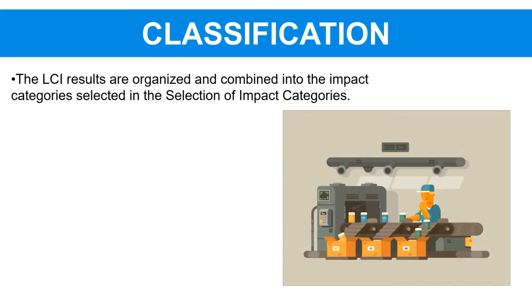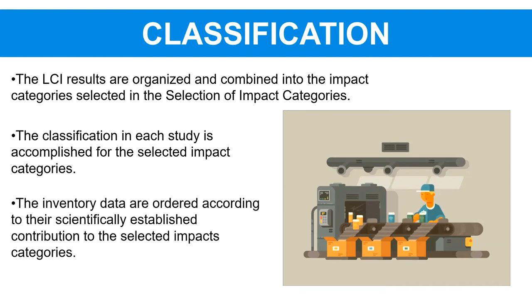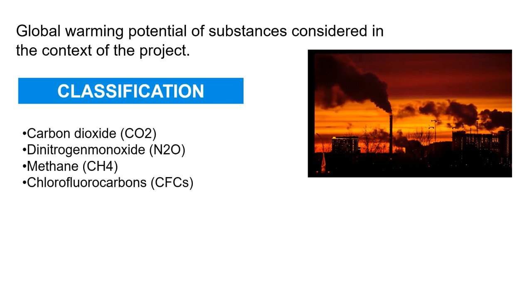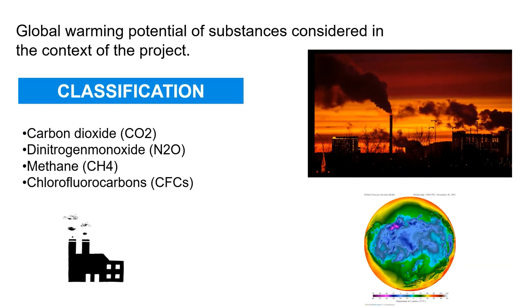Classification: the LCI results are organized and combined into the impact categories selected previously. In each study, classification is accomplished for the selected impact categories, and the inventory data are ordered according to their scientifically established contribution to those categories. For example, substances classified under global warming potential include: carbon dioxide (CO2), dinitrogen monoxide (N2O), methane (CH4), and chlorofluorocarbons (CFCs).